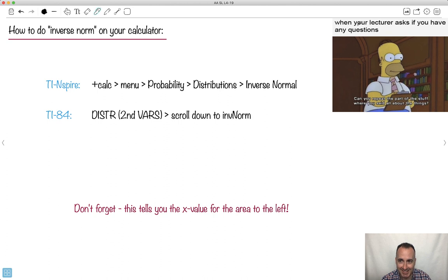How do you do it in a calculator? I like this from The Simpsons: 'Can you repeat the part of the stuff where you said about all the things?' This is maybe how you feel about inverse norm. But on the TI-Inspire, you can get to it by calculator, menu, probability, distributions, and then choose inverse normal. TI-84, you go distributions, and you scroll down to inverse norm.